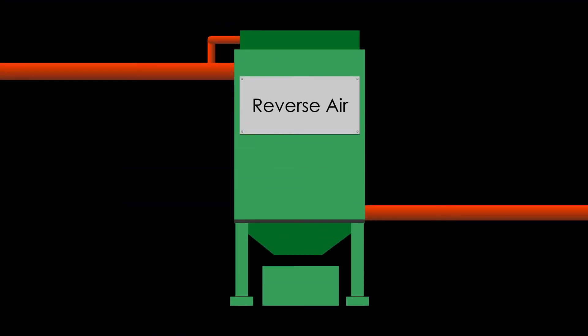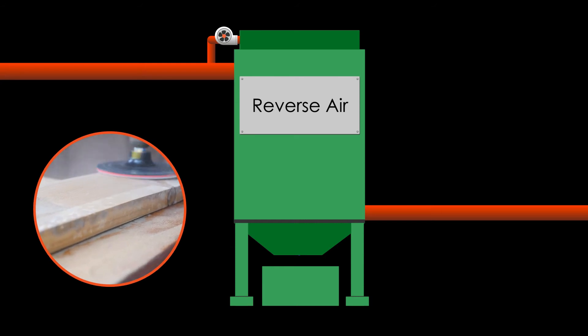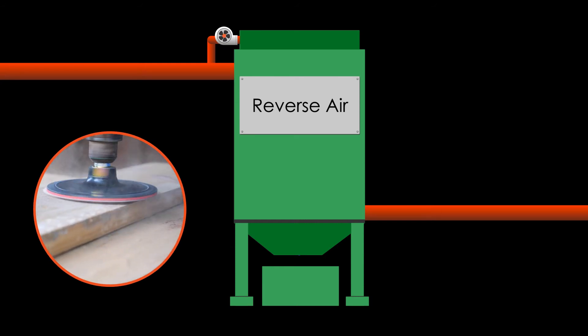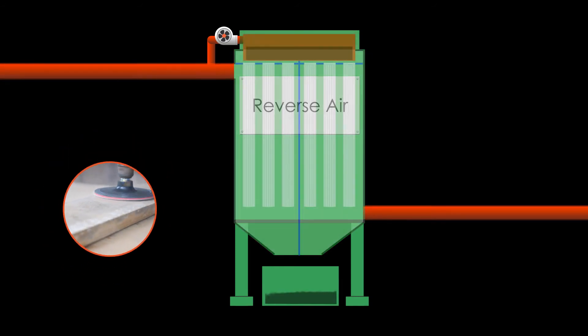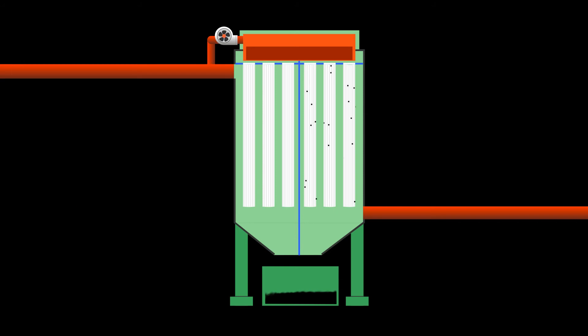And finally, let's consider reverse air baghouse. There are two styles of reverse air baghouses. More common nowadays, especially with filter dust such as those from grain or wood processing, is a round reverse air collector style wherein dust collects on exterior of the bags or filters.